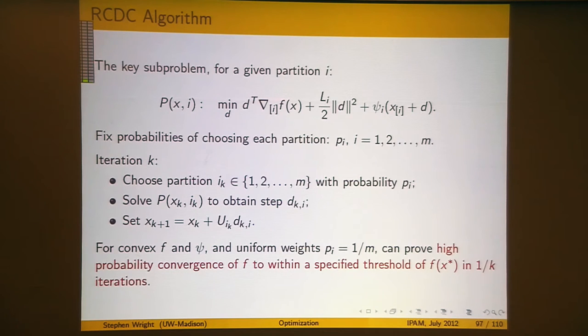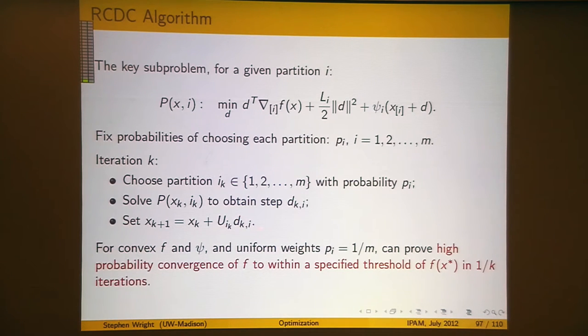The approach is: pick i using whatever probability distribution we've defined, solve this sub-problem to get a step d_k^i, and update partition i using this formula. I've had to expand d_k^i to the length of the full vector using the matrix U_i, which selects out the elements of x present in partition i. This is very much along the lines of the prox-linear type method discussed earlier.